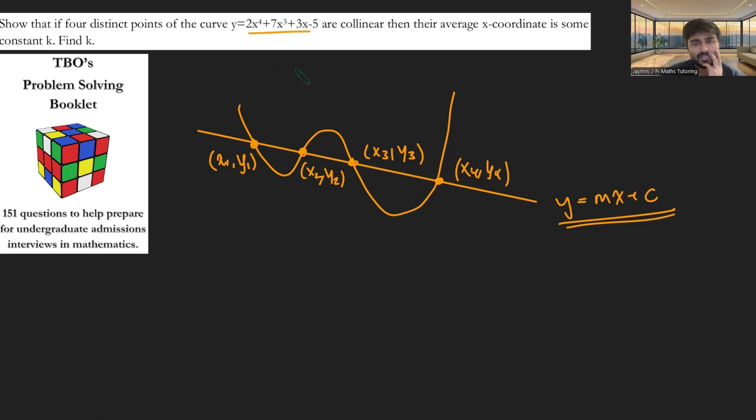Well, what can we do? We can look at the difference between these two things. So if I consider the function, which is 2x to the 4 plus 7x cubed, plus 3x minus 5, and then subtract mx plus c. And let me just call this f of x for the time being. I know that f of x here clearly is a quartic and so has at most four roots. But in fact, we know what those four roots are. They're going to be x1, x2, x3, and x4, because those lie on both the quartic and on the straight line mx plus c. So they're going to cancel out and they're going to be roots of this equation.